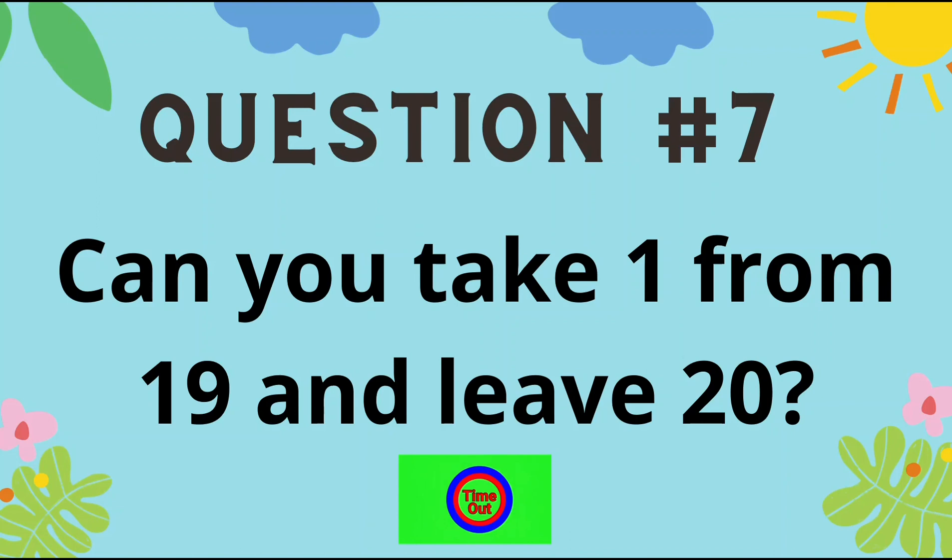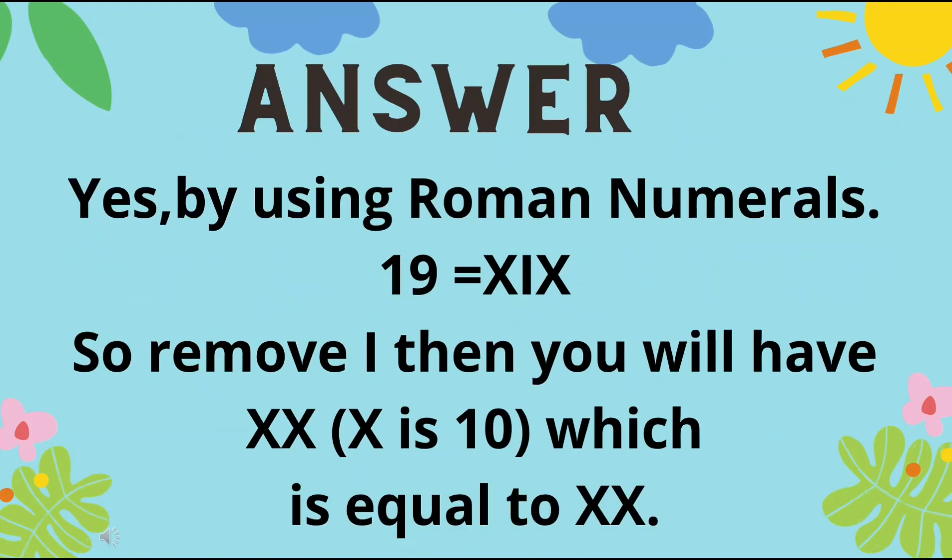What's the answer? Yes! By using Roman numerals. 19 is equal to XIX. So remove I, then you will have XX. X is equal to 10. So which is, if you have 2X, that means it's equal to 20!